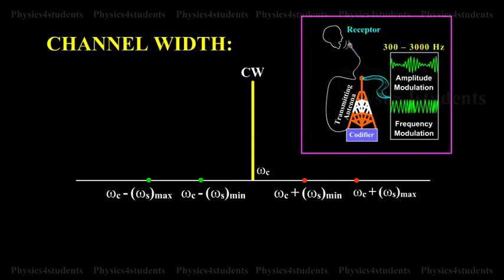However, in a broadcasting station, the modulating signal is the human voice or music, which contains waves with a frequency range of 300 to 3000 Hz.